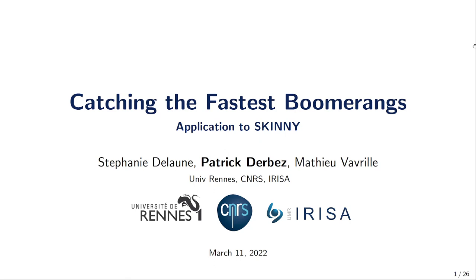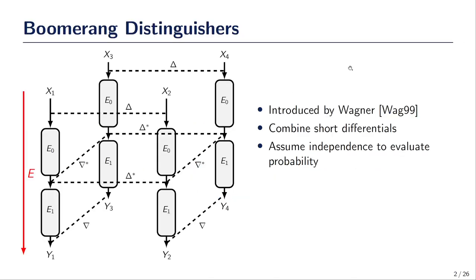Hello everyone! In this video I will present a joint work with Stéphanie Delon and Mathieu Vavry about Boomerang Distinguishers. Boomerang Distinguishers were introduced by Wagner in 1999 and the main idea is to combine two short differentials, as it may lead to a better probability than using only one long differential. To compute the probability of the corresponding Boomerang, we need some independent assumptions.